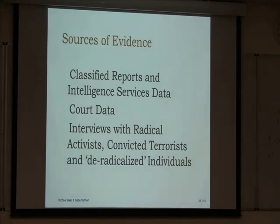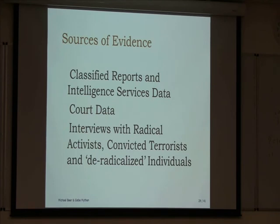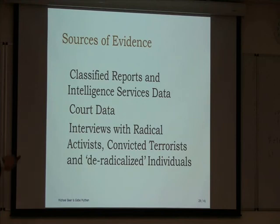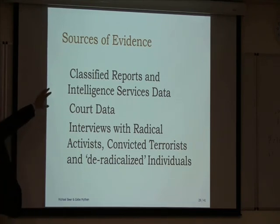Focusing on those top two models — where is the evidence coming from? How are people making these judgments and models of radicalization? As critical social scientists we might have questions. Sources include classified reports, intelligence services data, court reports and data, interviews with radical activists however defined, convicted terrorists, and supposedly de-radicalized individuals. To me, that doesn't seem a particularly firm set of sources on which to form policy. You would perhaps want to speak to people among the general population to get some kind of understanding. How reliable might evidence from convicted terrorists or classified reports and intelligence services data actually be?